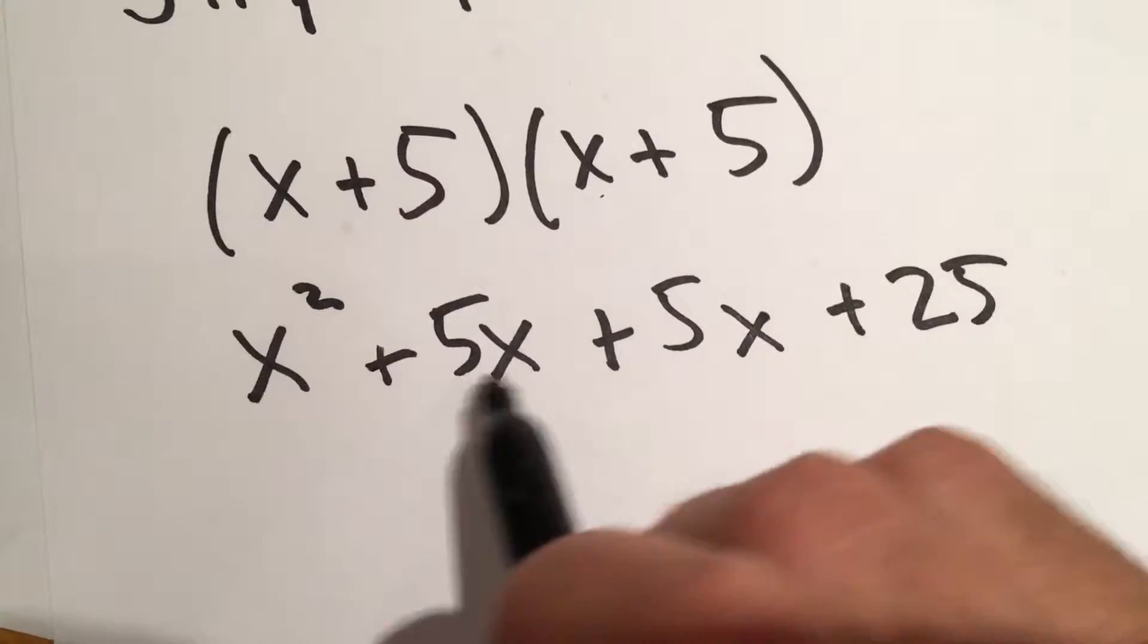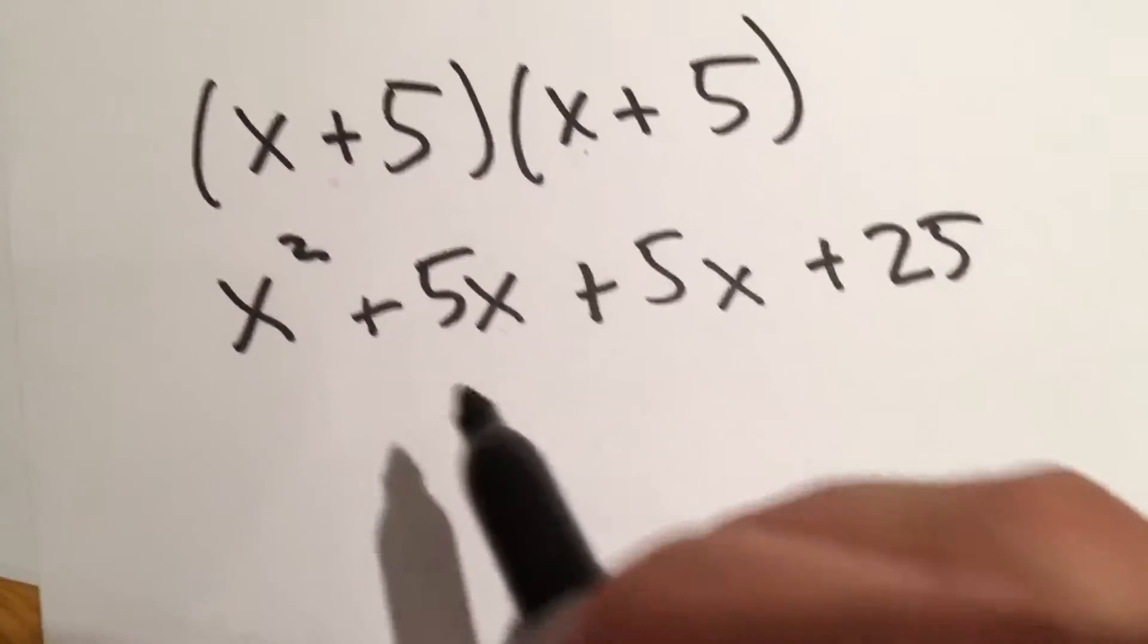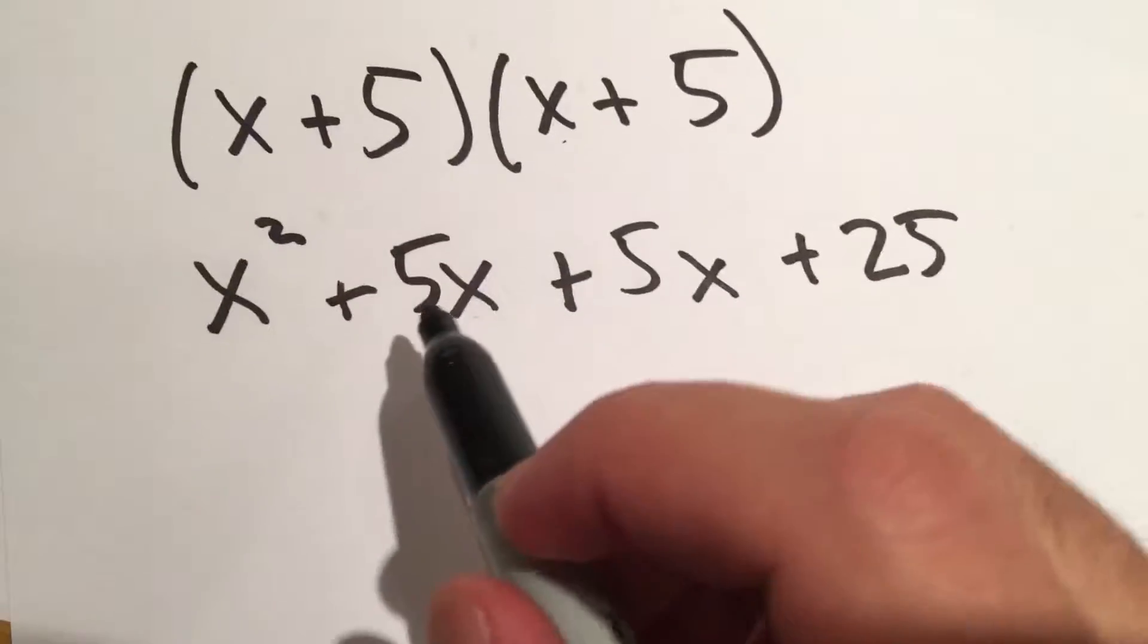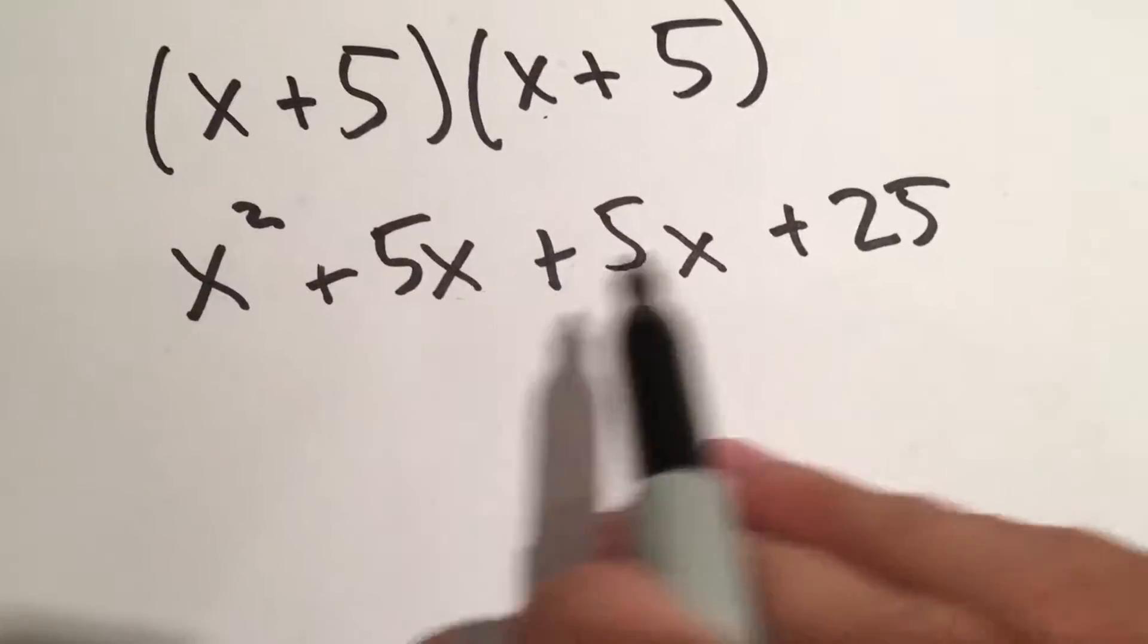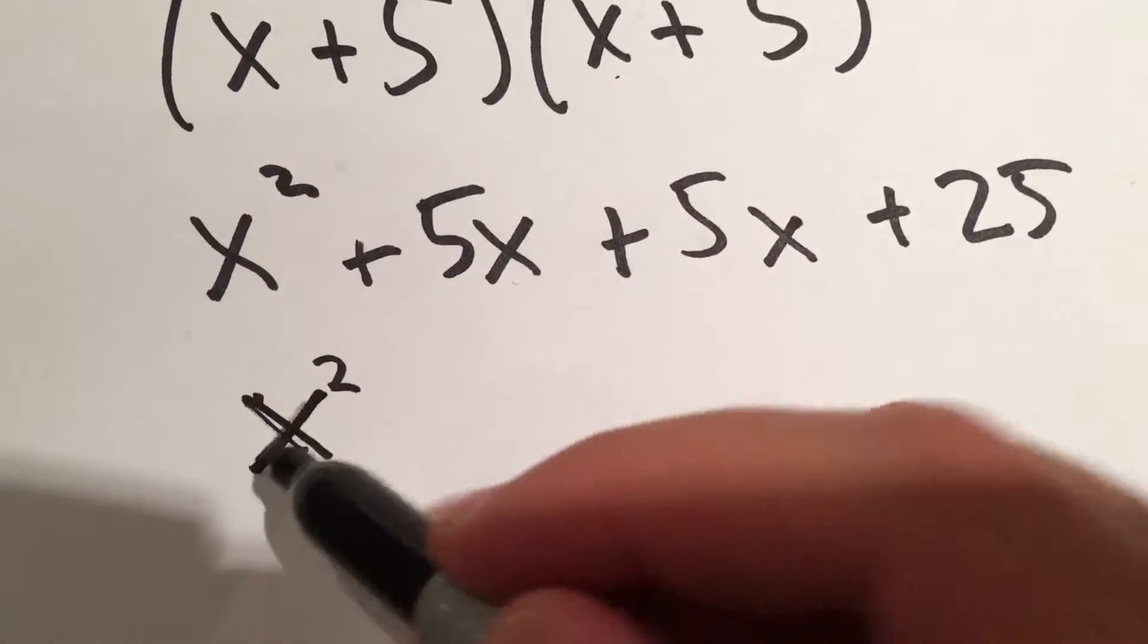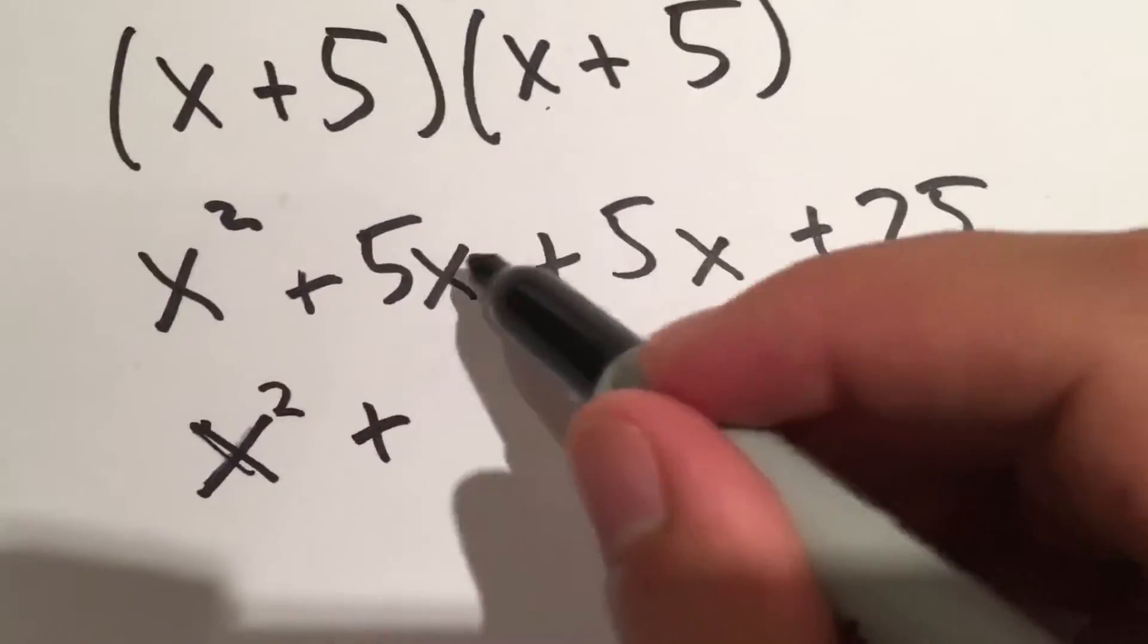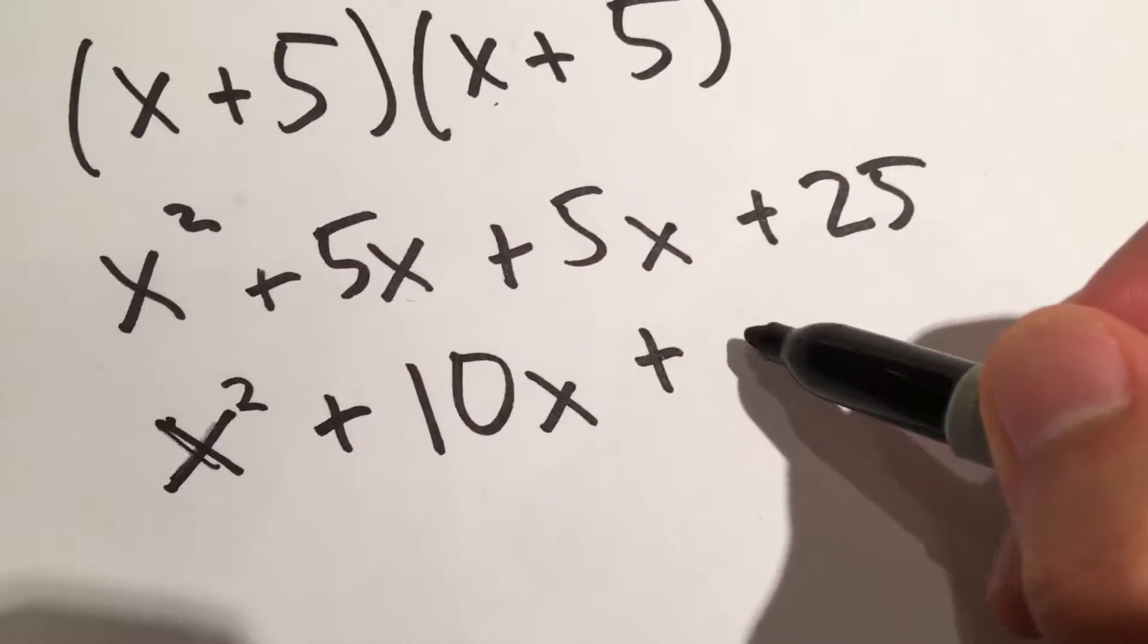Because these two terms have the same variable here, same format, we can add them together. We can't do that to the x squared because it's squared. This is just an x. So we have x squared, plus 10x, plus 25.